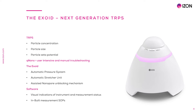The EXOID implements semi-automation with a fully automatic pressure system and resolution of sub-1 pascal, speeding up the process, improving sensitivity and minimizing variability. There is also an automated stretcher unit which controls the stretch of the nanopore, and an assisted nanopore unblocking mechanism to help measurement with complex samples.